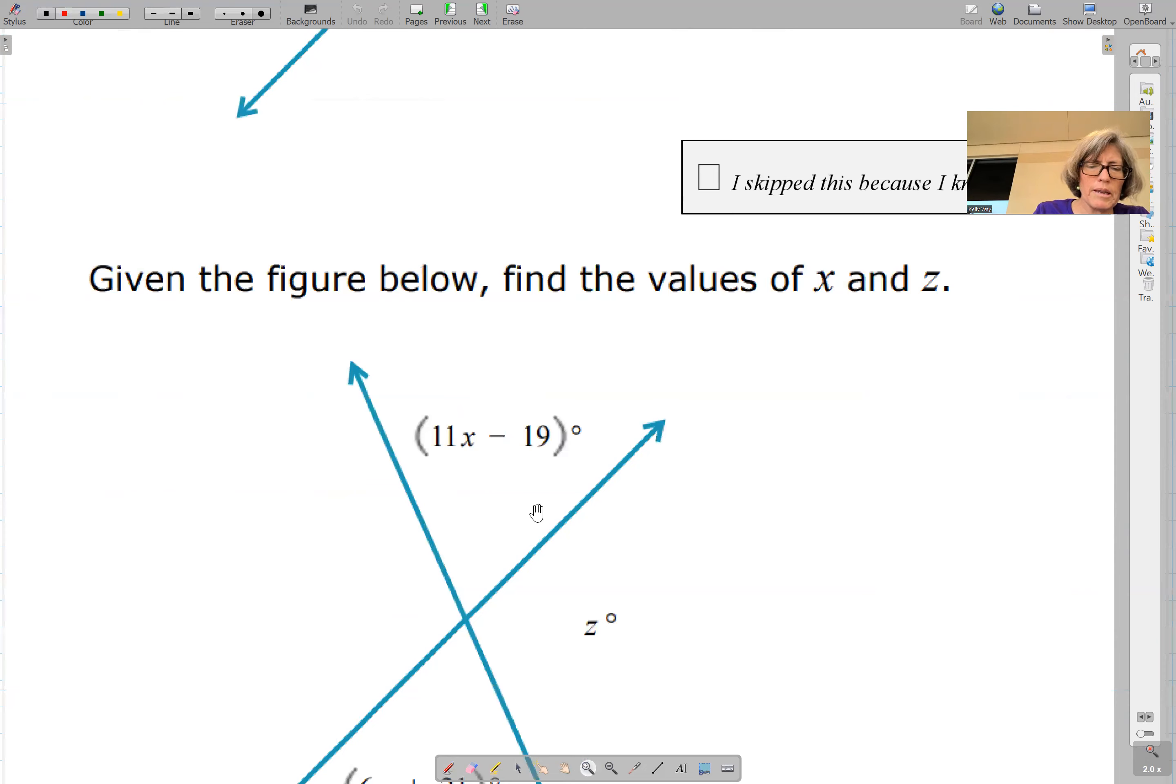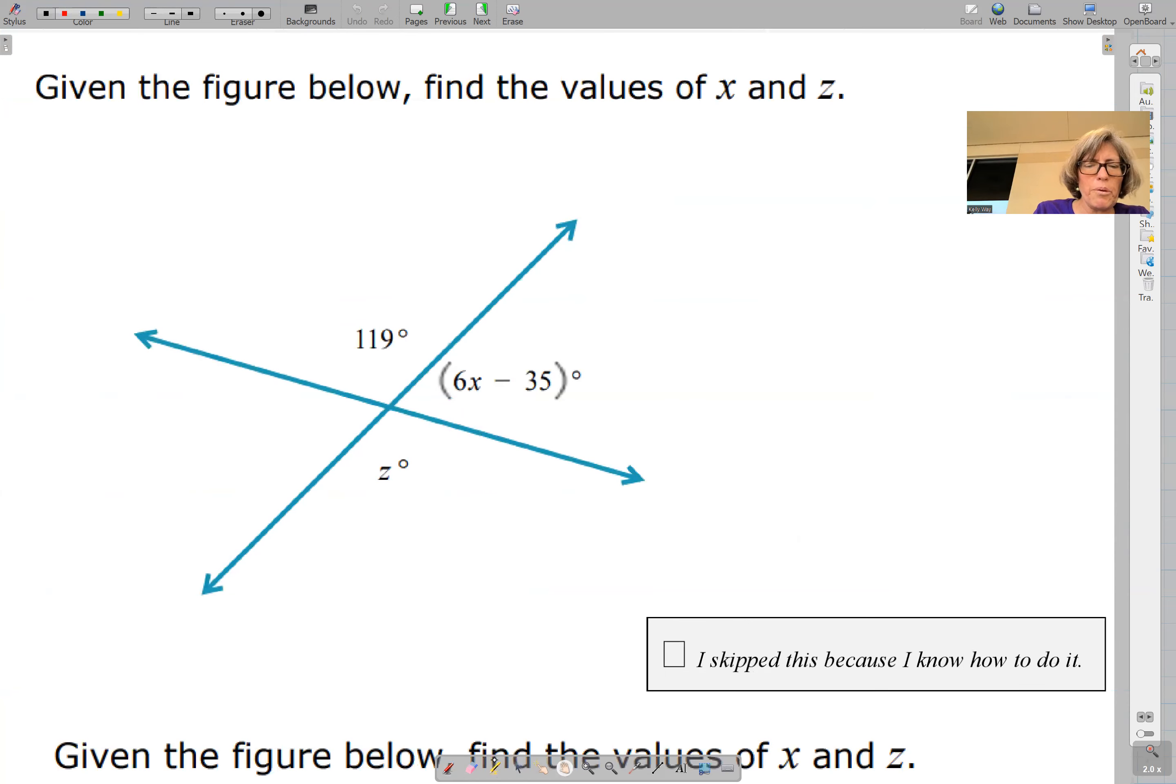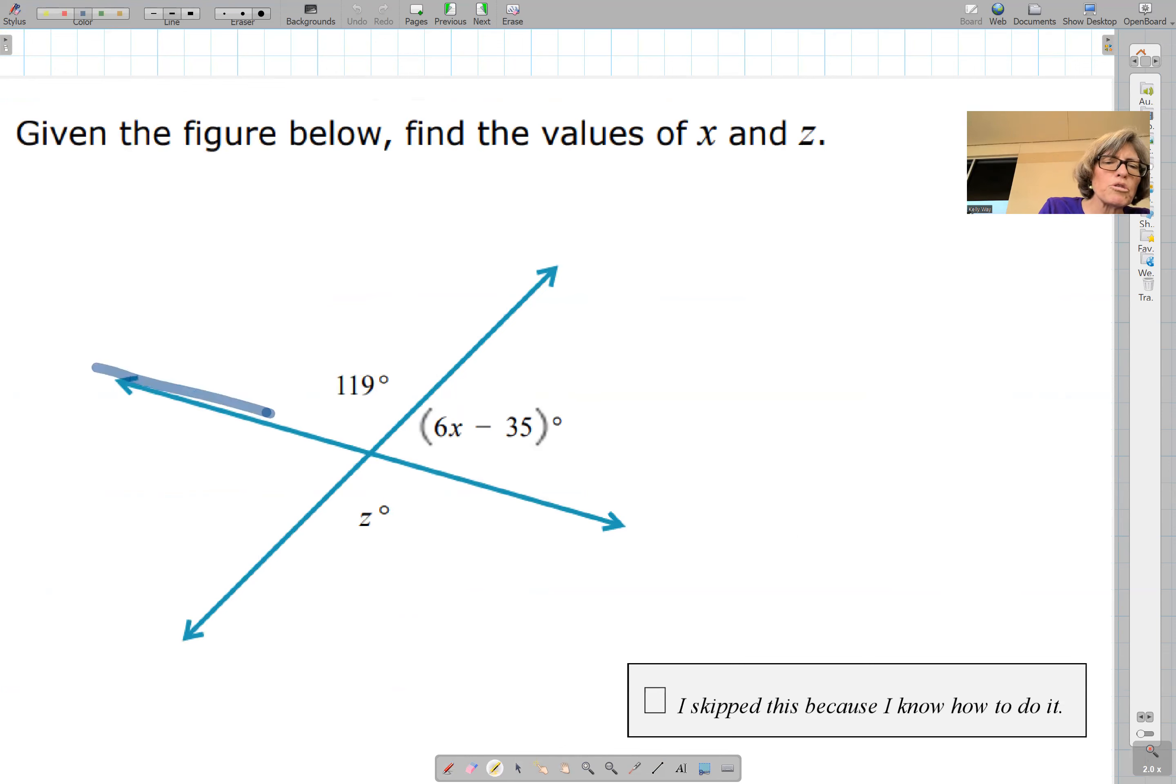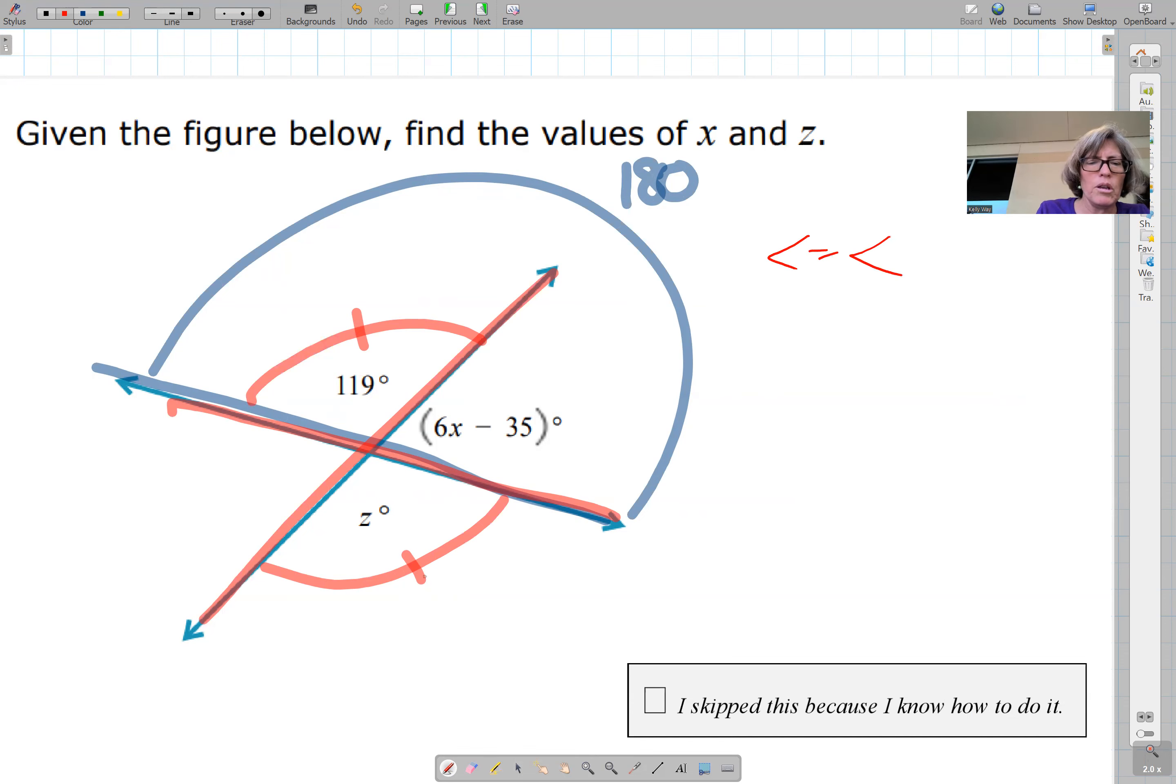Coming here, you want to sweep and ask yourself what's true. So straight line, sweep, that's a linear pair. We know those add up to 180. And then if you trace these two, they are vertical, which means they are congruent. So your thing equation, if we want to solve for z, is just angle equals angle. So we know that this is 119.